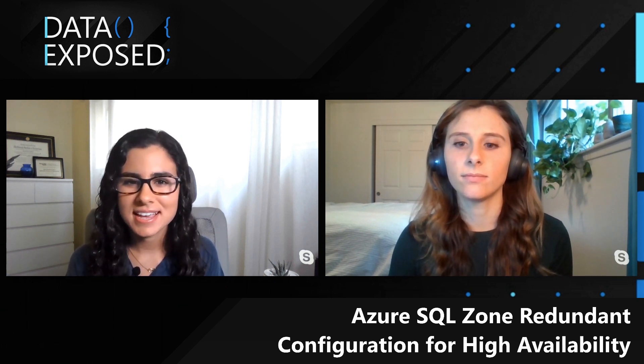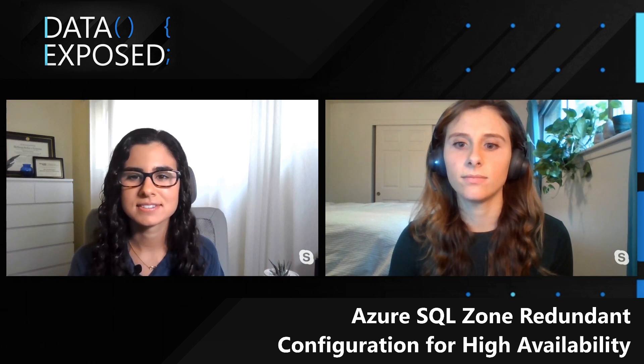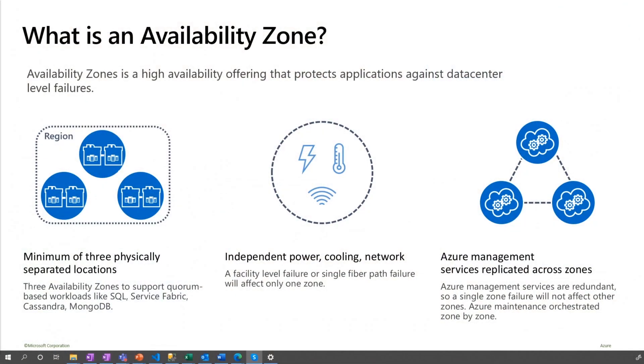Can you start by just telling us what is an Availability Zone? Yes. In Azure, an Availability Zone is a completely separate area within a region. So within an Availability Zone enabled region, there is at minimum three different Availability Zones.